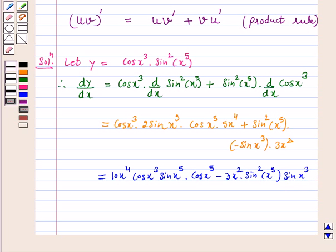So we have differentiated the given function and our answer is 10x⁴sin(x⁵)cos(x⁵)cos(x³) - 3x²sin(x³)sin²(x⁵).